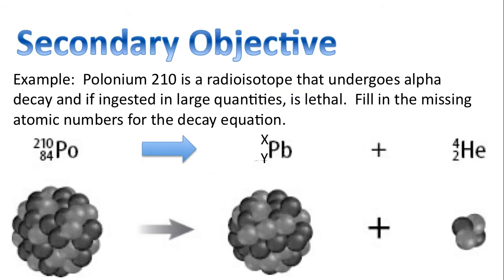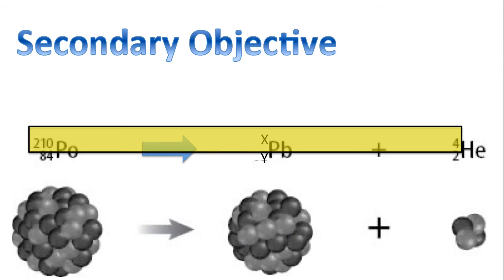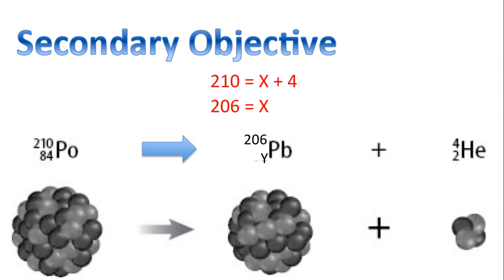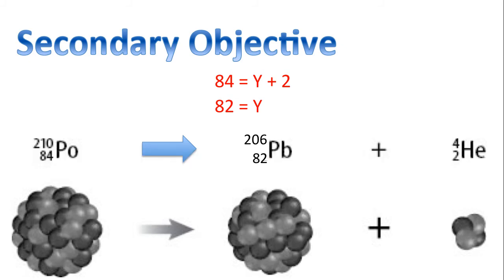Let's look at our secondary objective. Polonium-210 is a radioisotope that undergoes alpha decay, and if ingested in large quantities, is lethal. Fill in the missing atomic numbers for the decay equation — can you solve for x and y? Focusing on the mass numbers: 210 equals x plus 4, so x equals 206. And solving for y, focusing on the atomic numbers: 84 equals y plus 2, so y equals 82.